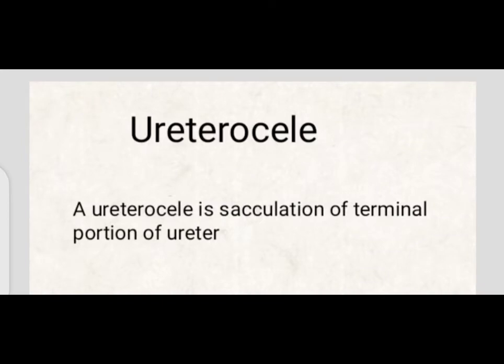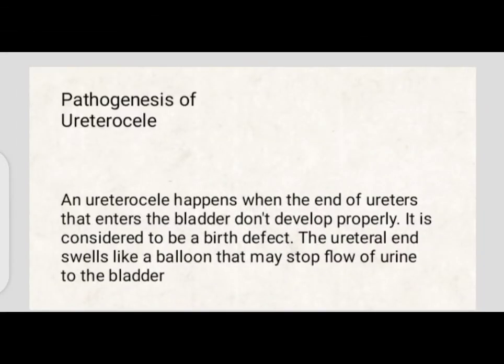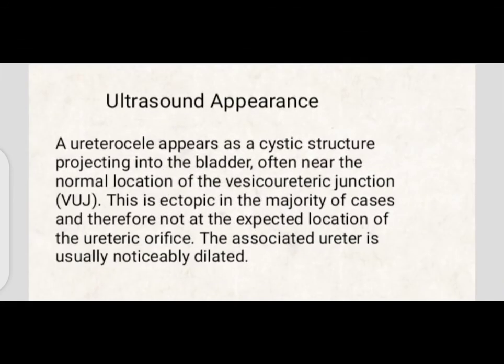A ureterocele is a circulation of the terminal portion of the ureter inside the urinary bladder. It happens when the ends of the ureter that enter the bladder don't develop properly. It is considered to be a birth defect. The ureterocele swells like a balloon that may stop the flow of urine.